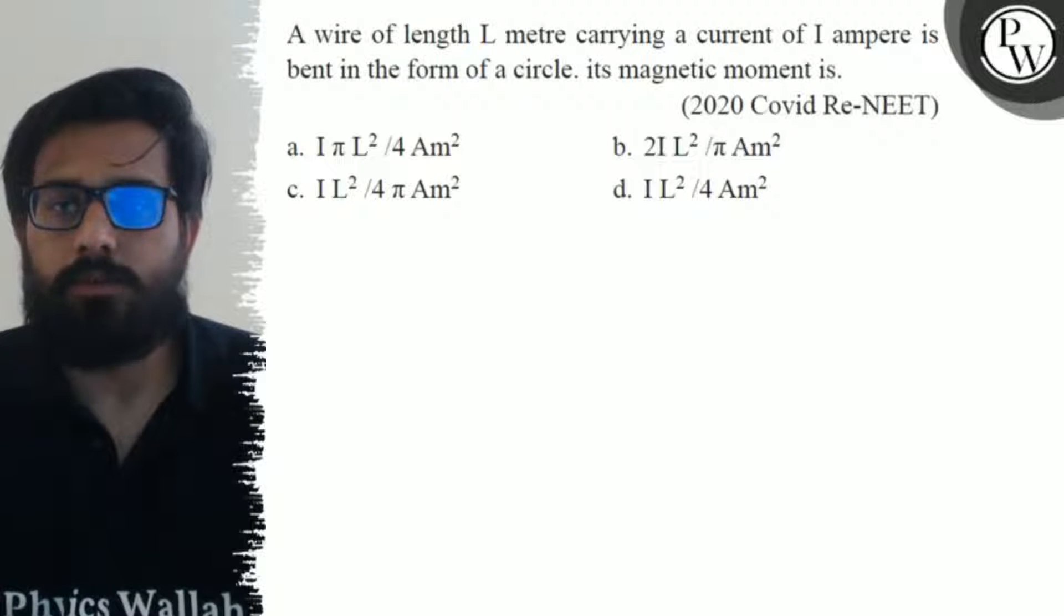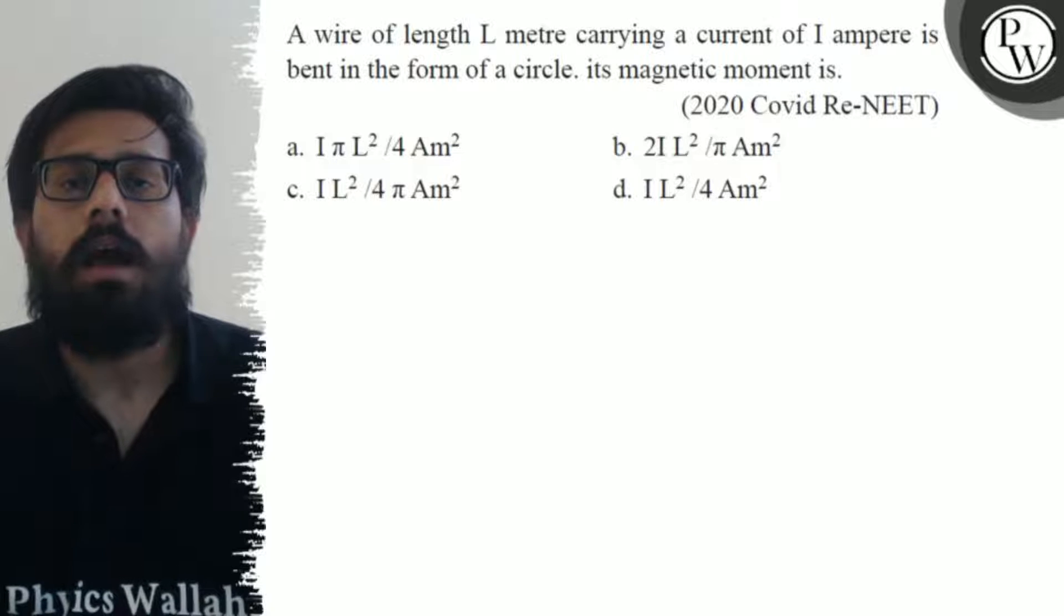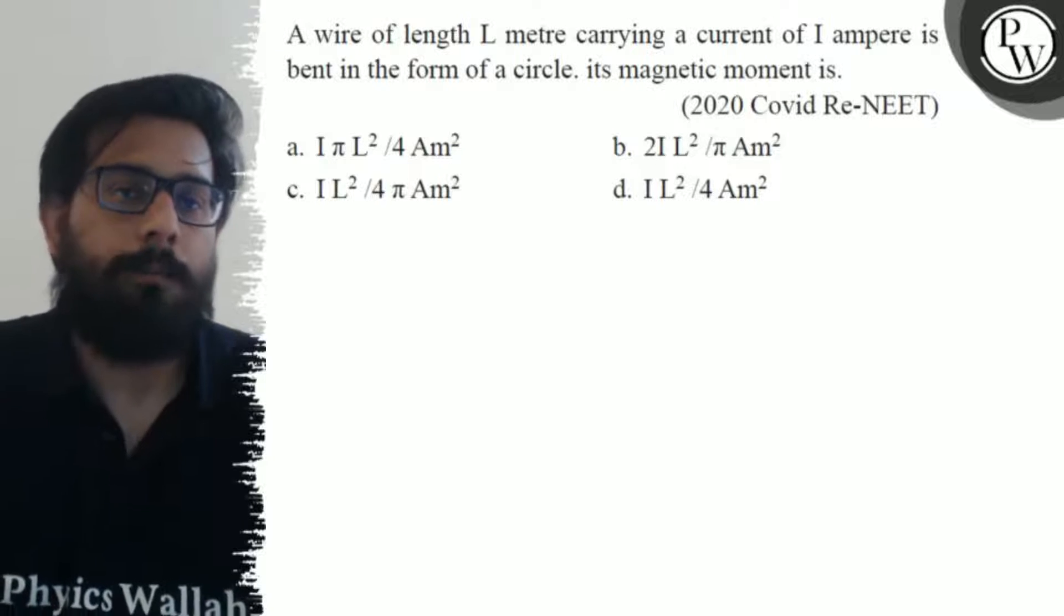Second option is 2I L² upon π ampere meter square. Third option is I L² upon 4π ampere meter square, and the fourth option is I L² upon 4 ampere meter square.